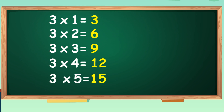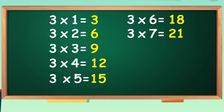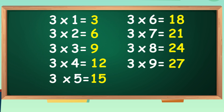Three fives are fifteen. Three sixes are eighteen. Three sevens are twenty-one. Three eights are twenty-four. Three nines are twenty-seven. Three tens are thirty.